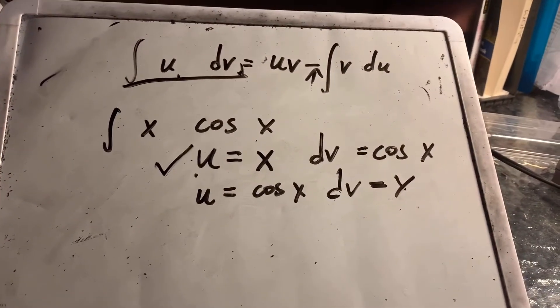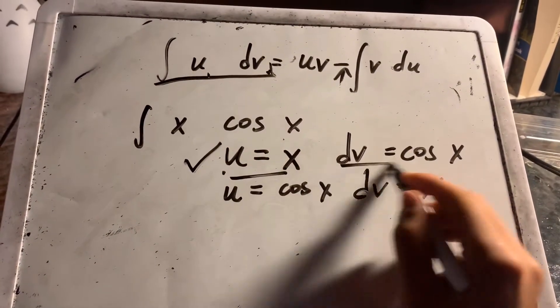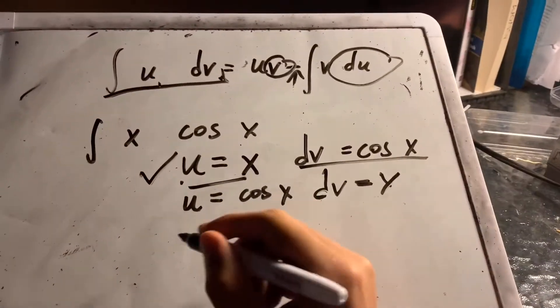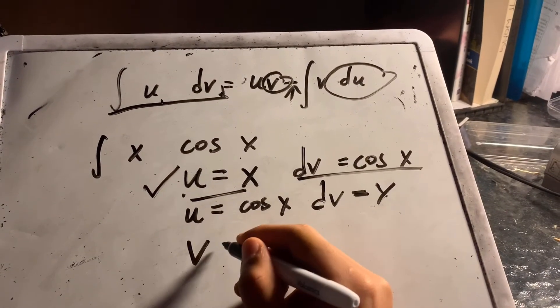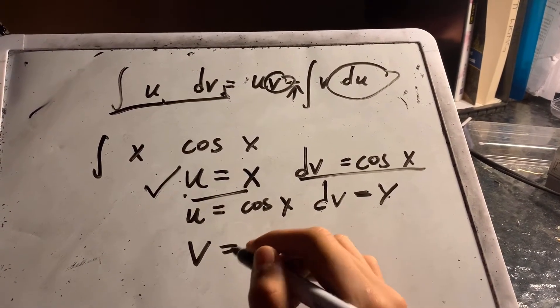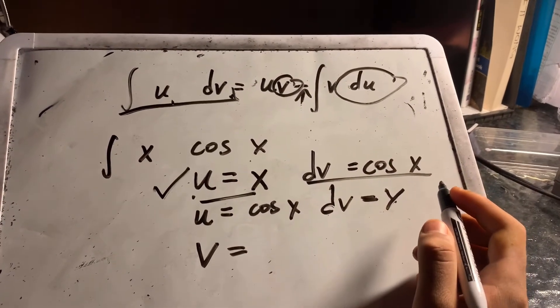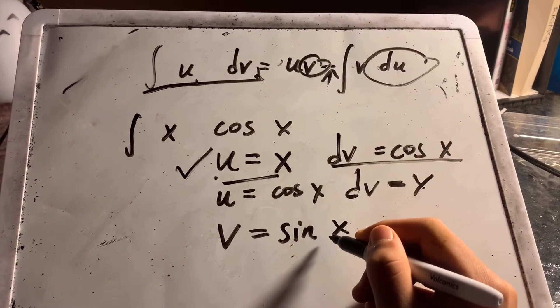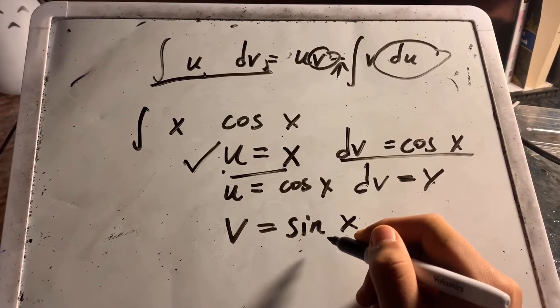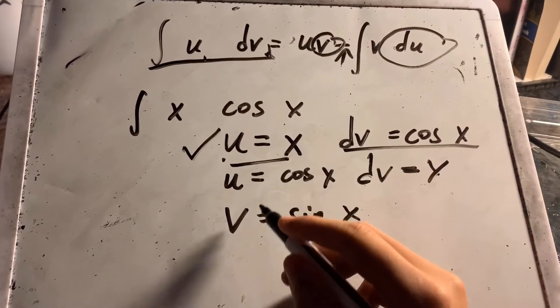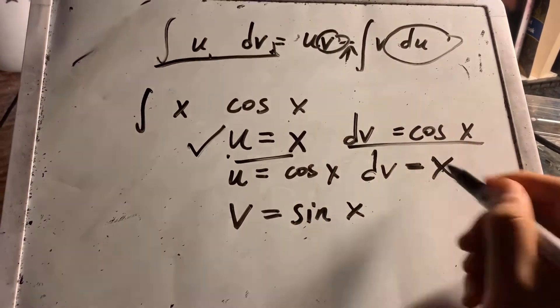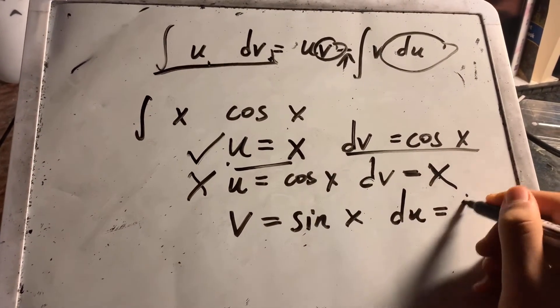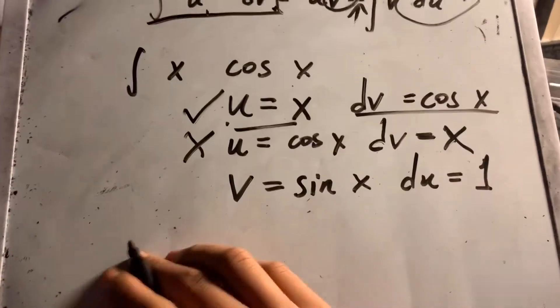To solve that, since you already know this, you need to find v and du. We know v, the anti-derivative of dv, is going to be sin x. Then, since u is equal to x, du is going to be 1. Okay, so we get the four things down.